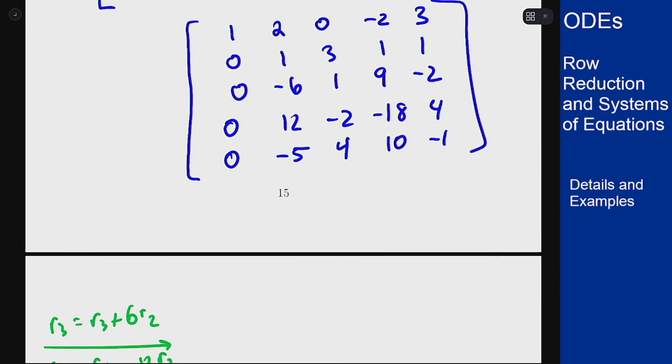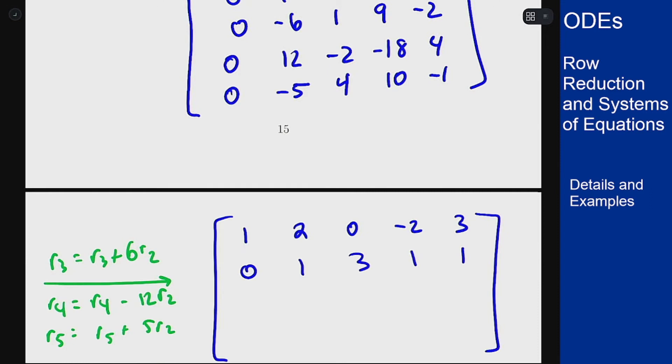So you can copy down the first two rows, they aren't going to change in this step of the process. And now row 3 is row 3 plus 6 row 2. So I'll get a 0 here as expected. The 1's going to cancel out the minus 6 as it should.